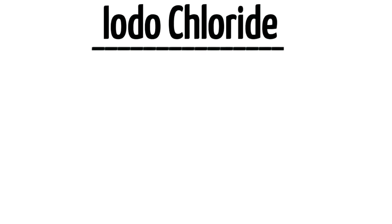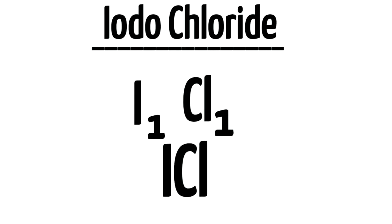Then the final formula is iodo chloride. Iodine is 1, so I1. Chlorine is similarly Cl1. As both have the same numbers, I can write ICl. Thank you.